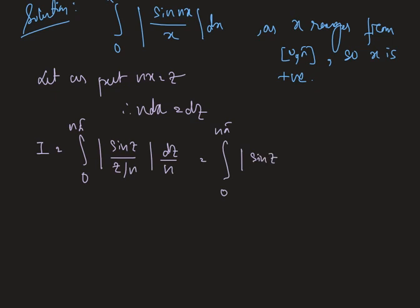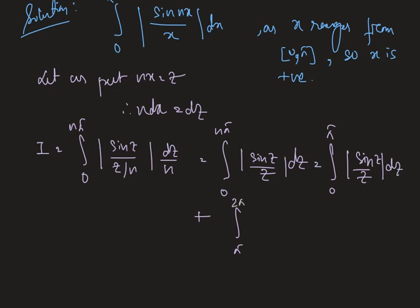We split this as: integral from 0 to π of |sin(z)/z| dz, plus integral from π to 2π of |sin(z)/z| dz, plus dot dot dot, plus integral from (n−1)π to nπ of |sin(z)/z| dz.